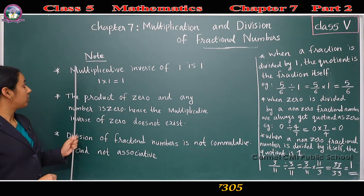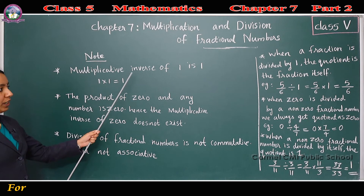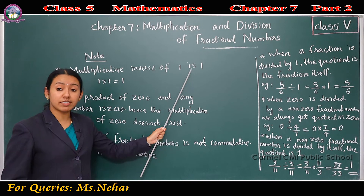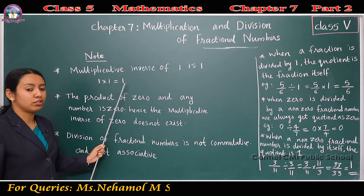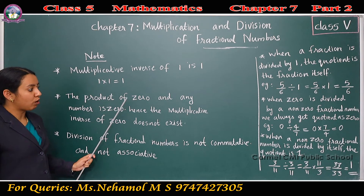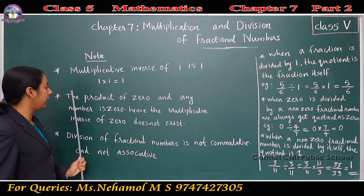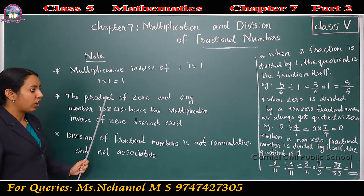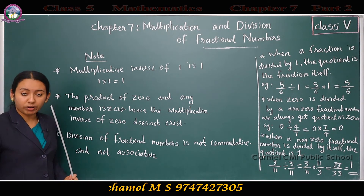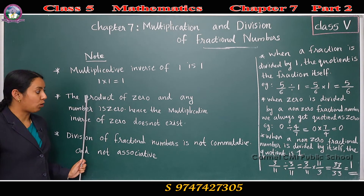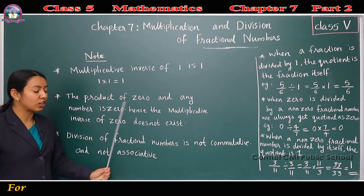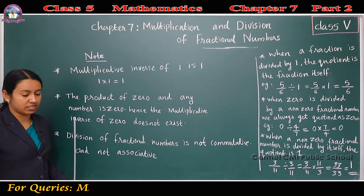Note — first point: the multiplicative inverse of 1 is 1, because 1 into 1 is 1. Second point: the product of 0 and any number is 0, so the multiplicative inverse of 0 does not exist. 0 has no multiplicative inverse.